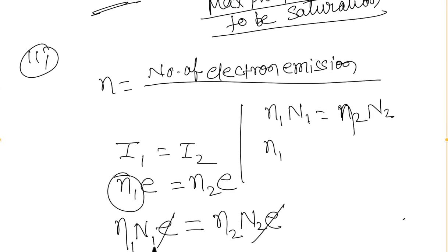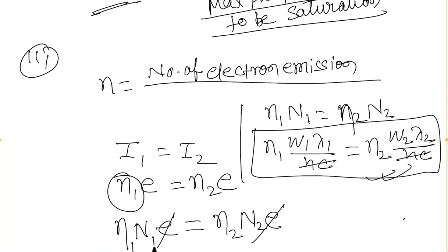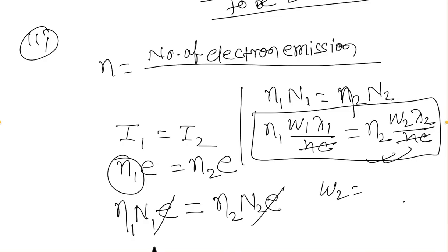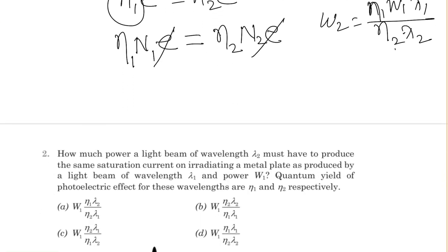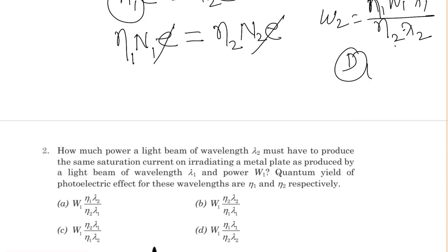N1 is the number of incident photons per second in the first case: N1 = W1·λ1/hc, and N2 = W2·λ2/hc. The factor hc cancels from the equation. You can then easily calculate the value of W2. The result is: W2 = η1·W1·λ1 / (η2·λ2). From this equation, option D is the correct answer. Thank you.